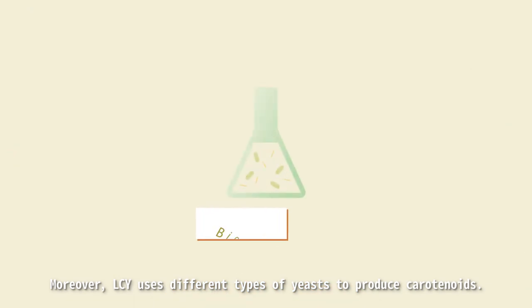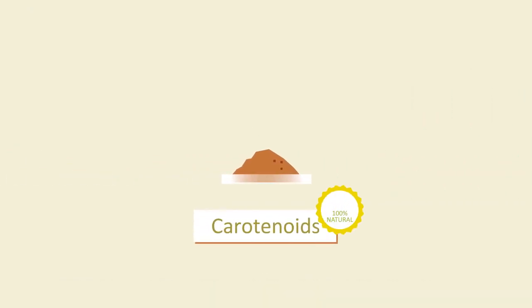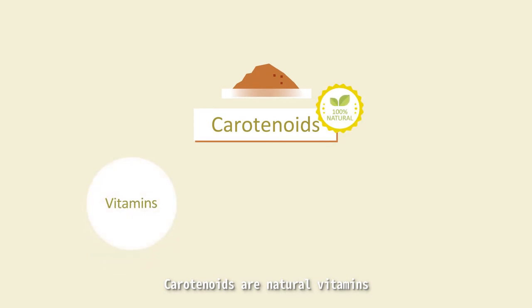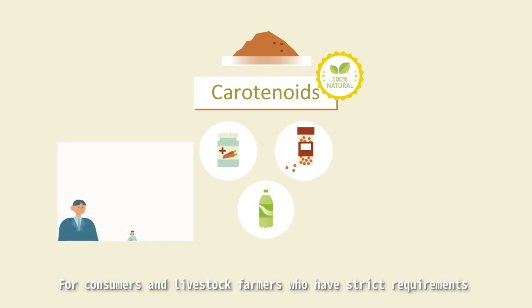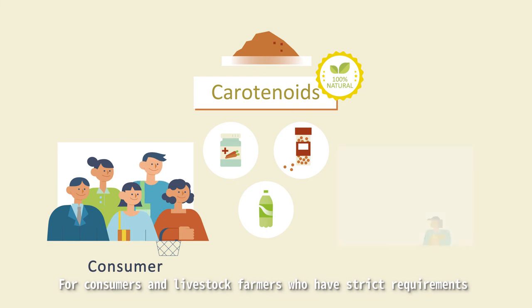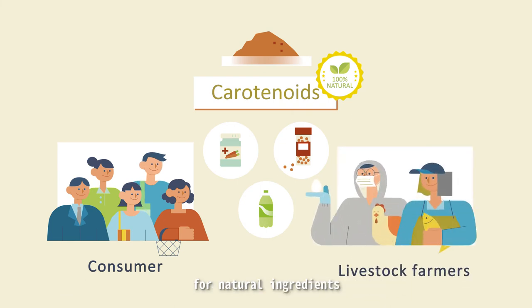Moreover, LCY uses different types of yeasts to produce carotenoids. Carotenoids are natural vitamins, food colorants, and antioxidants. They are common ingredients in dietary supplements, food, or animal feeds. For consumers and livestock farmers who have strict requirements for natural ingredients, bio-based products are their best choice.